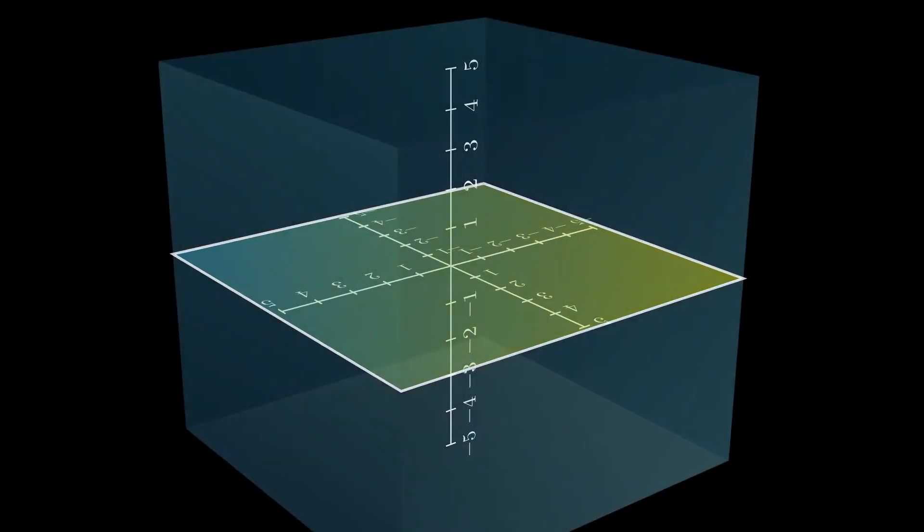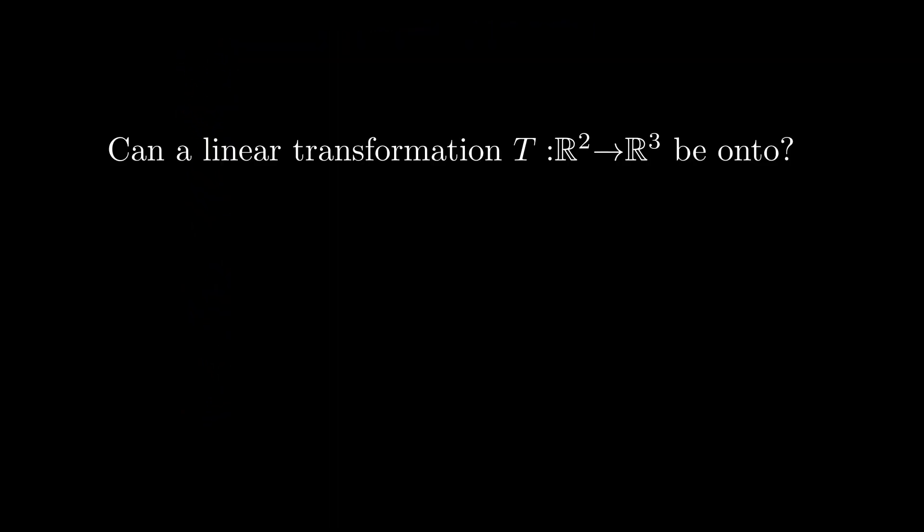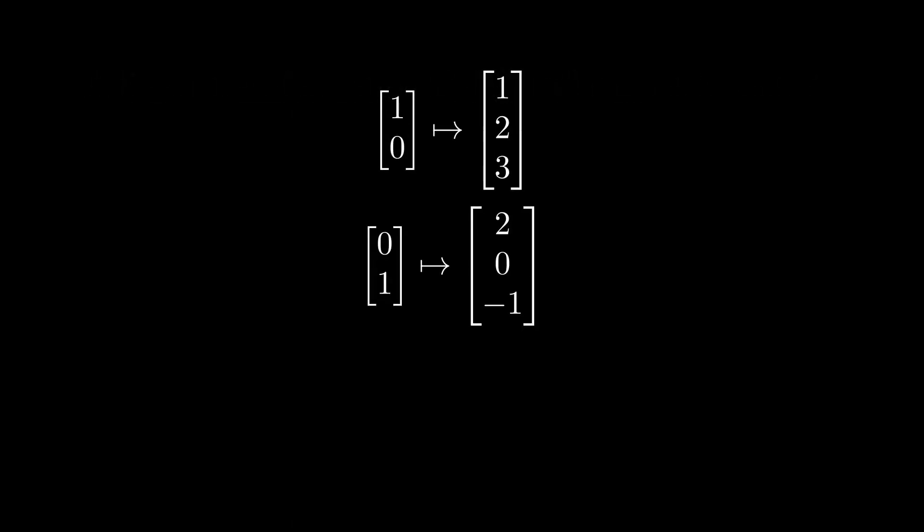And now, none of these is equal to the entire 3D space. So, we have proven that a transformation from 2D to 3D cannot be onto. The problem was, we only had two vectors to assign when the output had three dimensions.